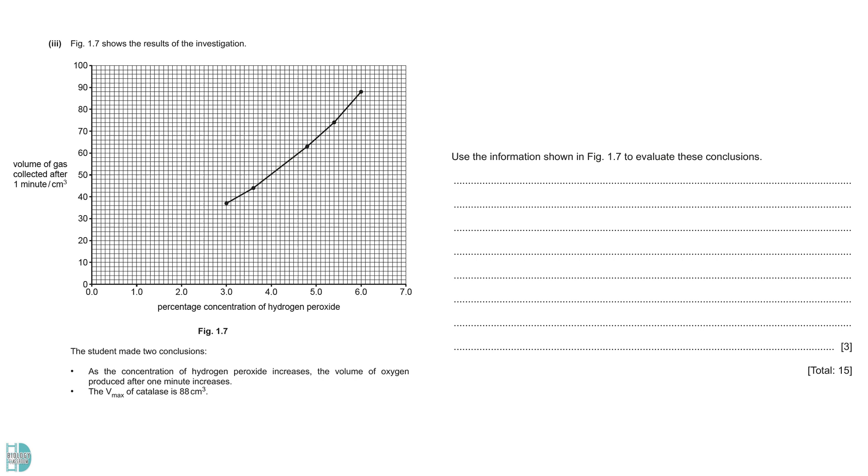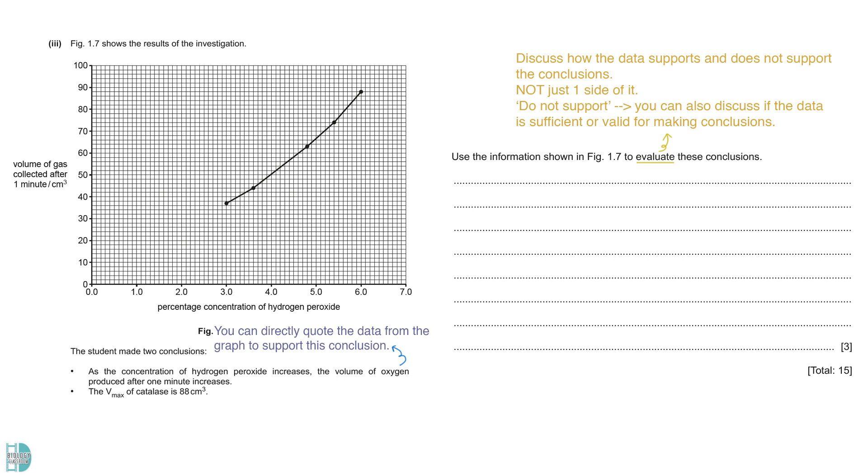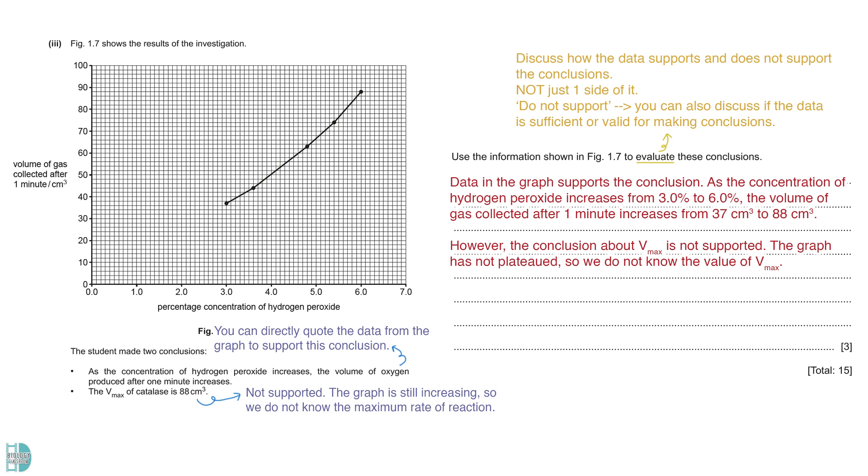Question 3 wants you to use the information shown in Figure 1.7 to evaluate the conclusions made by the student. The command word evaluate means that you have to discuss how the data supports and does not support the conclusions. You can't just talk about one side of it. For the do not support parts, you can also discuss if the data is sufficient or valid for making conclusions. The first conclusion can be supported by quoting the data from the graph. The graph shows a positive correlation between the concentration of hydrogen peroxide and the volume of oxygen collected. The second conclusion cannot be supported by the graph. To know the Vmax, we need to take the plateau part of a graph as it shows the maximum rate of reaction at a high substrate concentration. The graph we have here has not leveled off. It is still increasing, indicating that the maximum rate of reaction has not been reached.